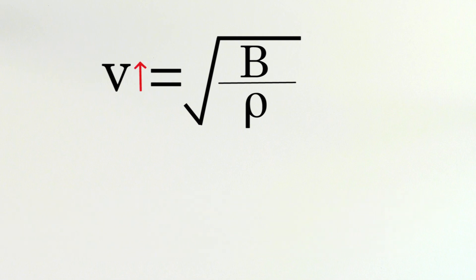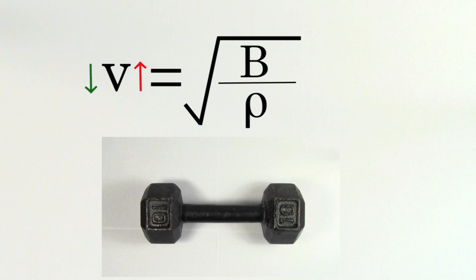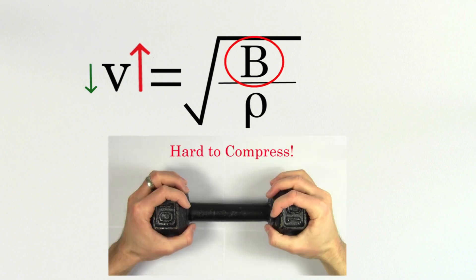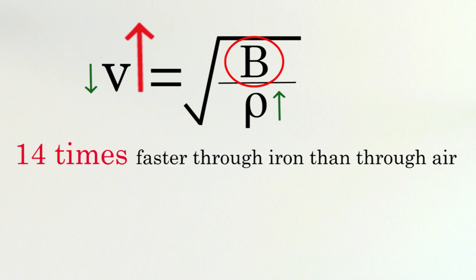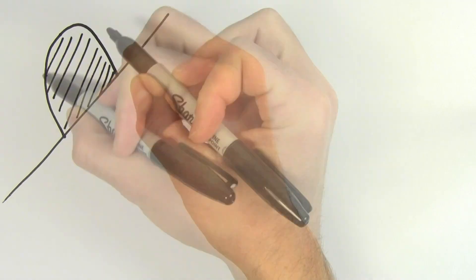So which is it? Does sound travel faster through iron or slower? Well, it turns out that the higher stiffness of iron more than compensates for the increased density. And the speed of sound through iron is about 14 times faster than through air.